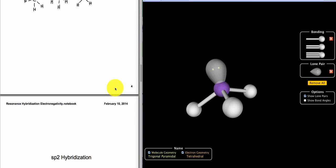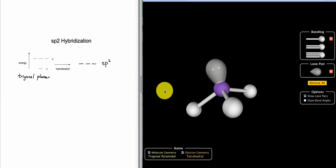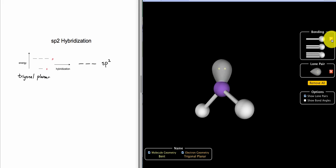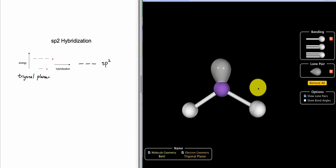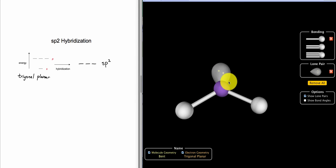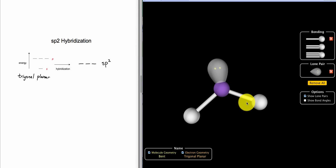Now when we move into the next type that we discussed in class, sp2 hybridization, the key difference is there's just one less component to deal with. There are three equivalent pairs of electrons, whether they're bonding or lone. In this case, you can see an example of that where we form a trigonal planar structure. That trigonal planar structure would necessitate three equivalent hybridized orbitals, and we would call those sp2 hybridized.